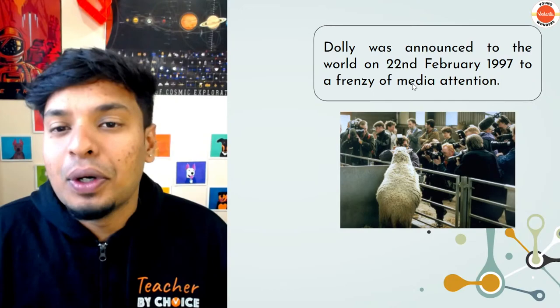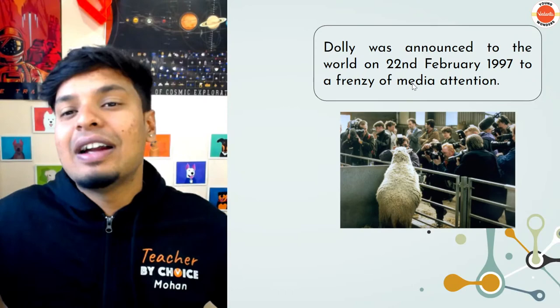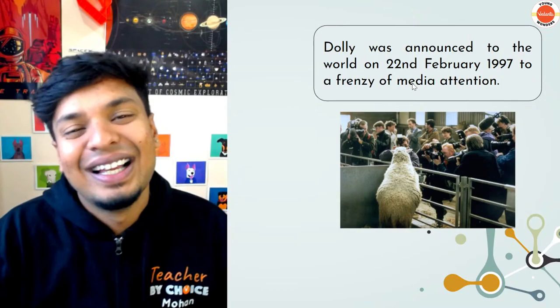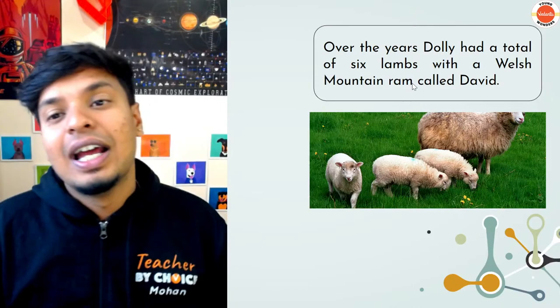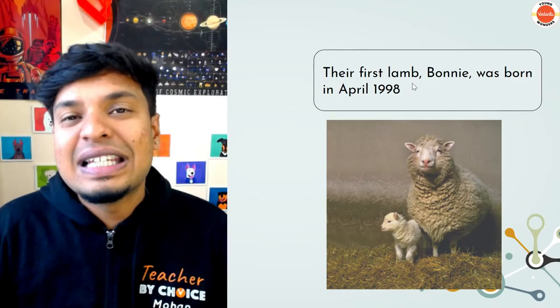Dolly was announced to the world on 22nd February 1997, causing a frenzy of media attention. Over the years, Dolly had a total of six lambs with a Welsh Mountain Ram. The first lamb, Bonnie, was born in April 1998. Dolly was able to live and reproduce normally.